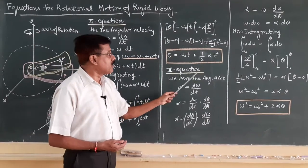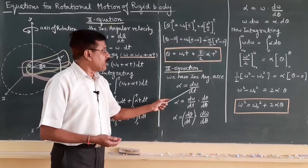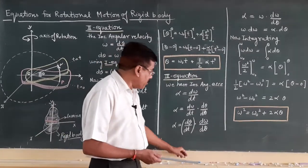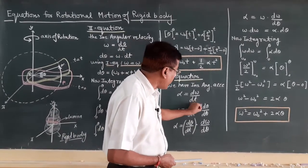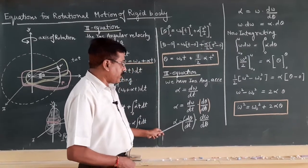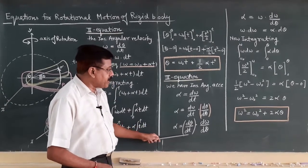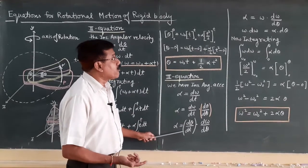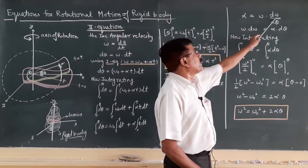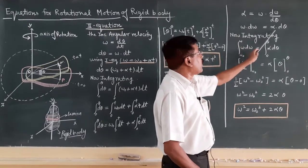For the third equation of motion, we start with instantaneous angular acceleration: alpha equals d-omega by dt. We multiply and divide by d-theta, then interchange positions so that d-theta over dt becomes angular velocity omega, giving us alpha equals omega times d-omega by d-theta. This can be rewritten as omega d-omega equals alpha d-theta.